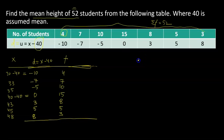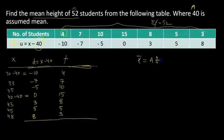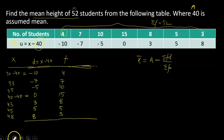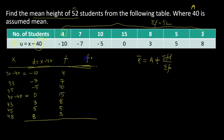The formula for the assumed mean method is: x-bar equals a plus the sum of fd divided by the sum of f. Here a is the assumed mean, which is already given as 40. If a common factor i is given, we multiply by it, but here it is not mentioned. So I need to calculate fd.